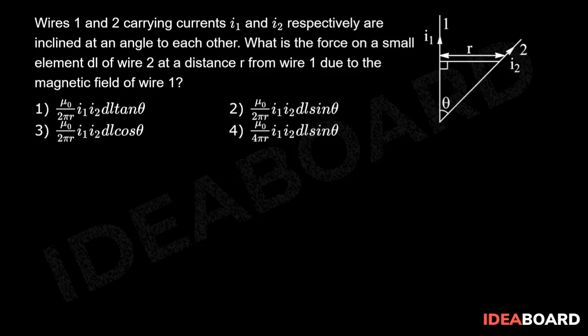Magnetic field B due to wire 1: B equals μ₀ by 4π into 2I₁ by R.